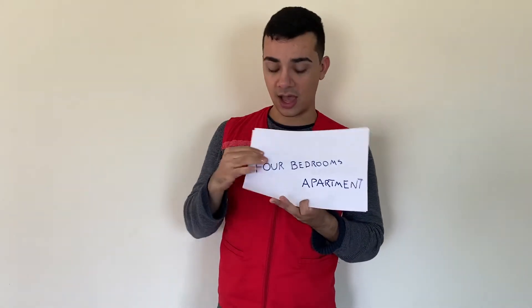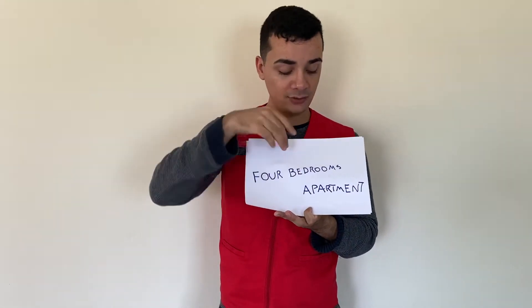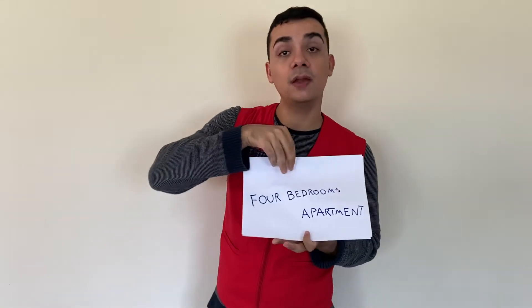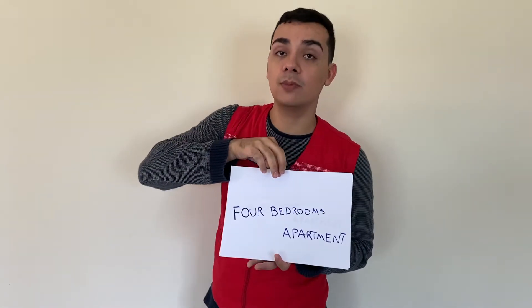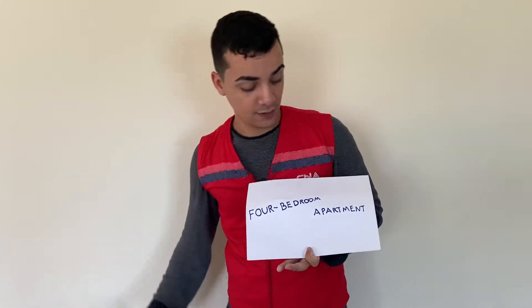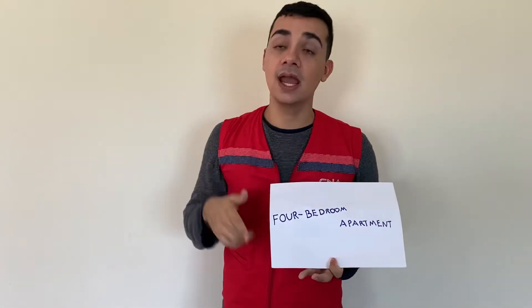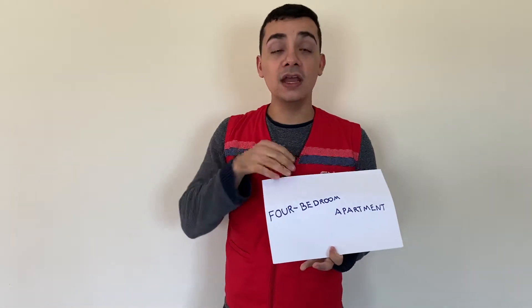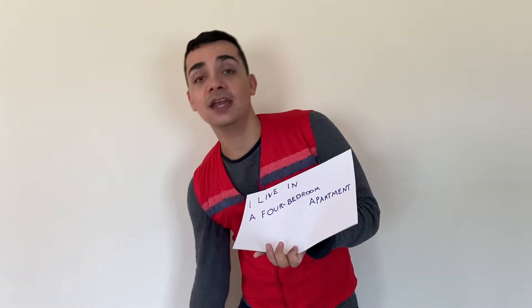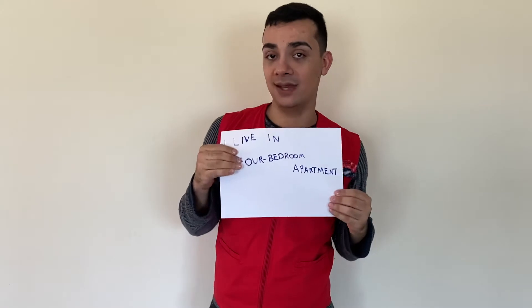But to get to the final sentence, you're gonna add a hyphen between 'four' and 'bedrooms.' And 'bedrooms' is not gonna be plural anymore — it's gonna be singular. Like this: four-bedroom apartment. And then all you have to do is create the full sentence: 'I live in a four-bedroom apartment.'